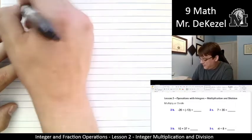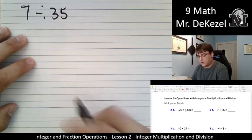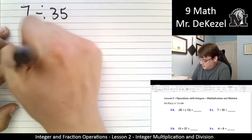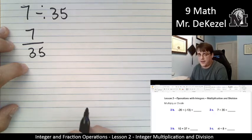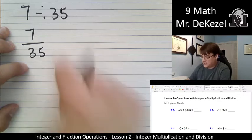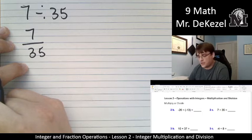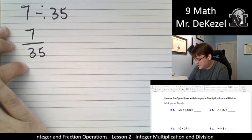We have 7 divided by 35. Again, we'll note that their signs are the same, so our answer is going to be positive. Let's write this as a fraction. 7, 35. Well, I can't divide 35 into 7, right? This is going to be a decimal. So let's see if we can reduce this fraction to make it something easier to work with. I know that 7 goes into 7 once. 7 also goes into 35 five times.